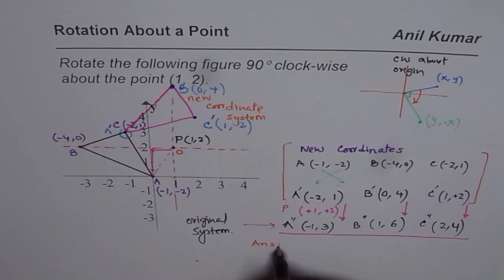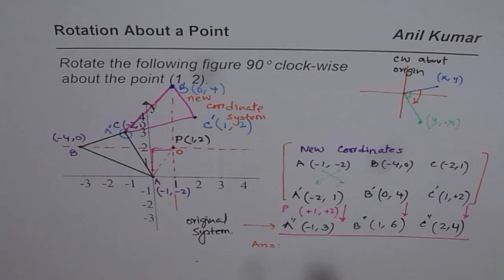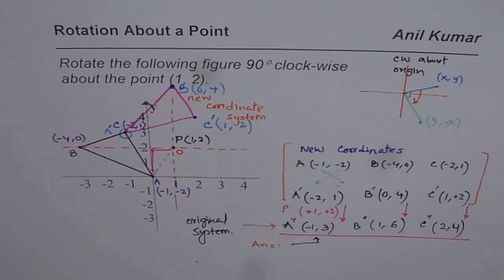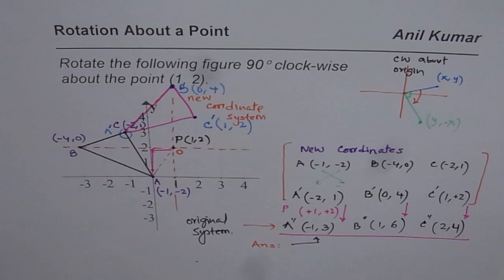I hope these steps help you understand the whole concept. The key idea is that you can shift the origin to the new point about which rotation is to be performed, apply the standard rotation rule, and then add the coordinates of that point to get your final result. That really helps you simplify and solve such complicated questions. Thank you and all the best.